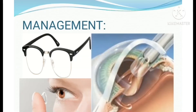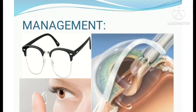How can we manage subluxation of the lens? Patients with subluxated lenses are treated with glasses or contact lenses if possible. If visual acuity cannot be improved with these options, surgery may be necessary to optimize vision. Lens extraction with or without placement of an intraocular lens can also be the management.